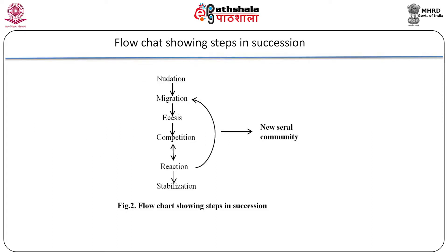This slide shows the flow chart of the steps in succession. It starts from nudation, migration, ecesis, competition, reaction, and finally stabilization. We can see that from reaction to migration it can repeat in different serial stages or communities, forming a new serial community each time.